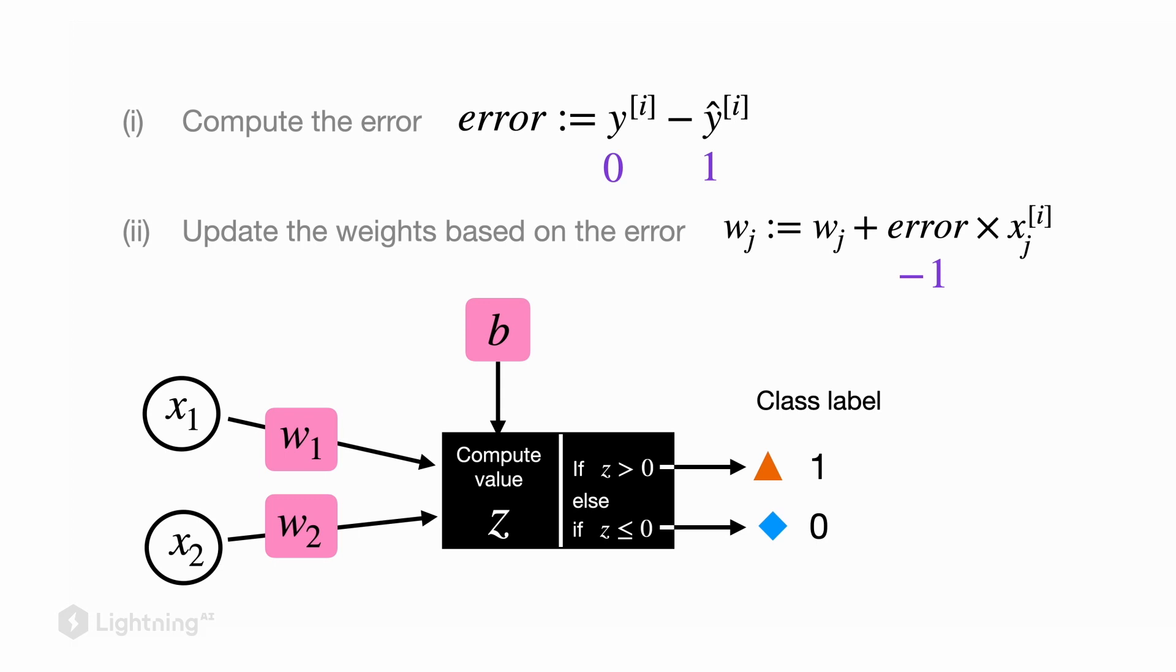So what we have to do now is we have to decrease the weight value to make the weighted sum smaller. So the update consequently is wj minus one times xj.